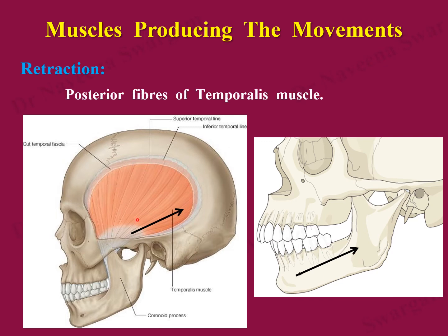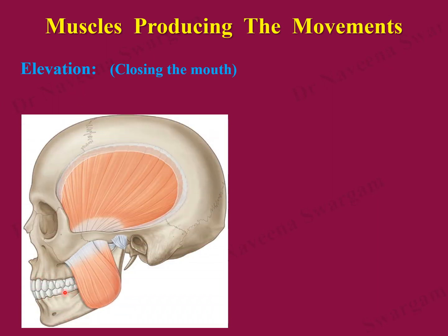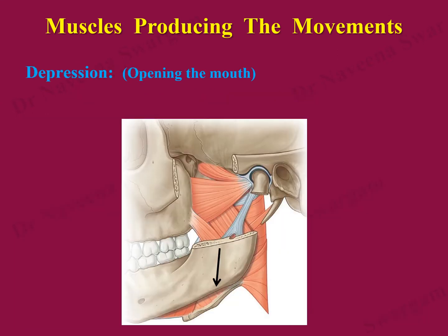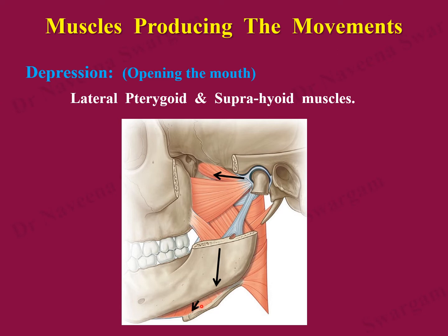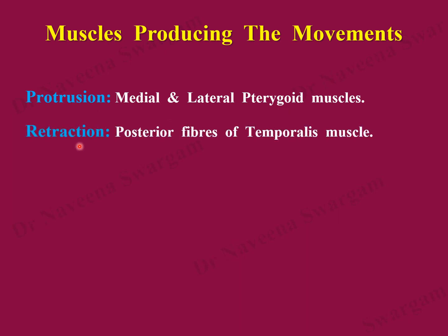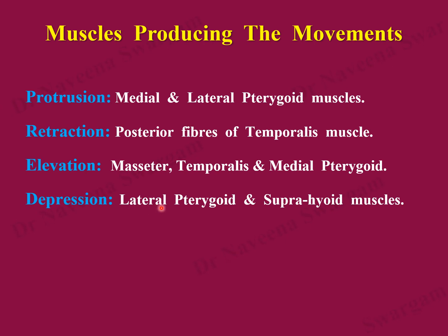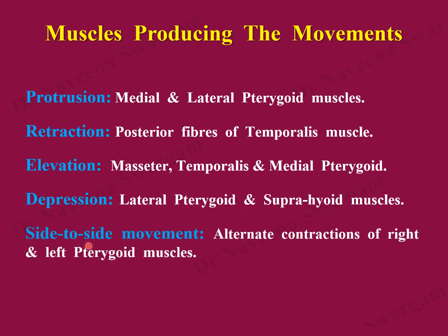Retraction of the mandible is produced by the posterior fibers of the temporalis muscle. Elevation of the mandible, or closing the mouth, is an anti-gravity action produced by the masseter, anterior fibers of temporalis, and deep fibers of medial pterygoid muscle. Depression of the mandible, or opening the mouth, is produced by the upper fibers of the lateral pterygoid muscle and suprahyoid muscles such as mylohyoid, geniohyoid, and digastric muscles. Side-to-side chewing movements are produced by alternate contractions of right and left pterygoid muscles.